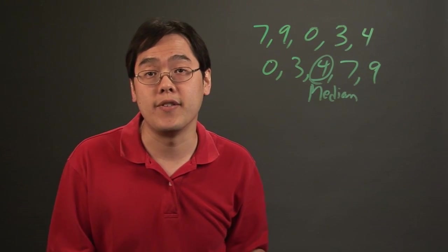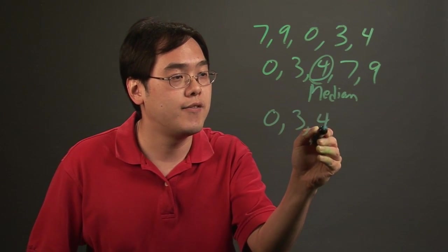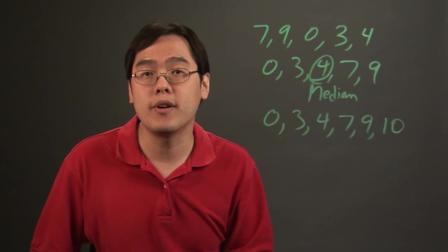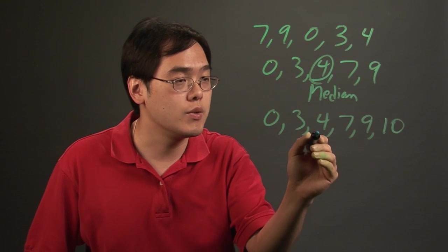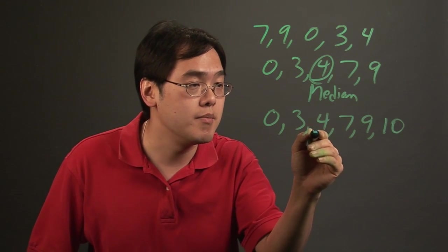However, if you have an even number of figures it's a little bit different. For example, if you had 0, 3, 4, 7, 9, and 10, what you want to do is take the middle two and find the average.